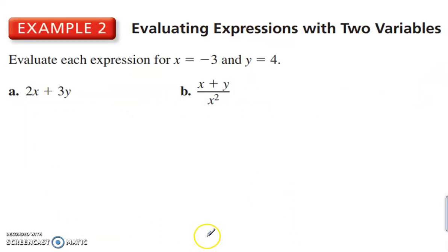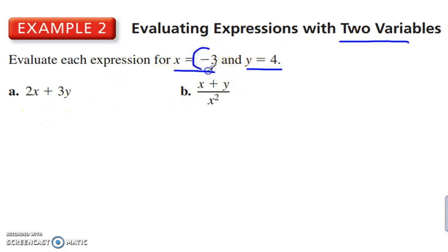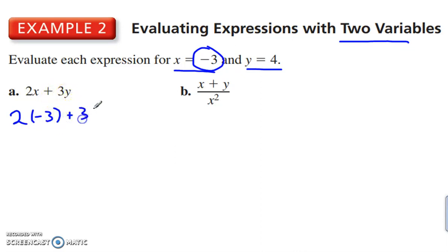Evaluating expressions with two variables. We have x is negative 3 and y is 4. We'll plug in negative 3 — remember, when you replace a variable with a value, put it in parentheses — minus 3, plus 3 times 4. 2 times negative 3 is negative 6, plus 12 is 6.